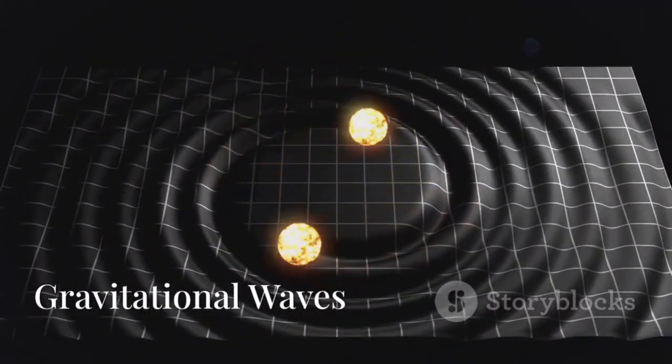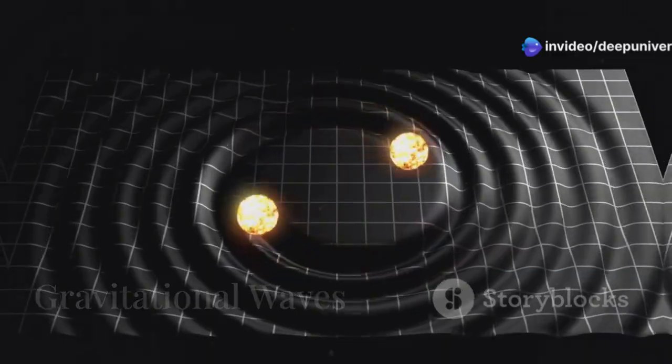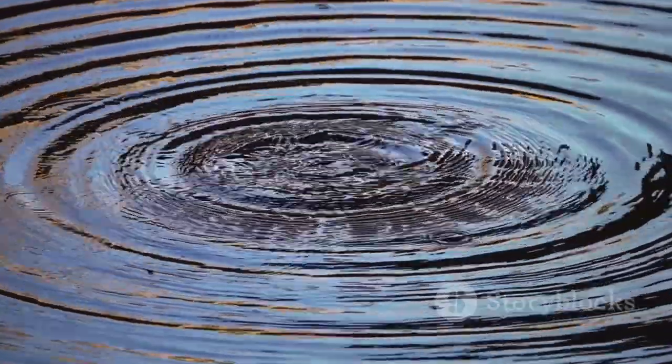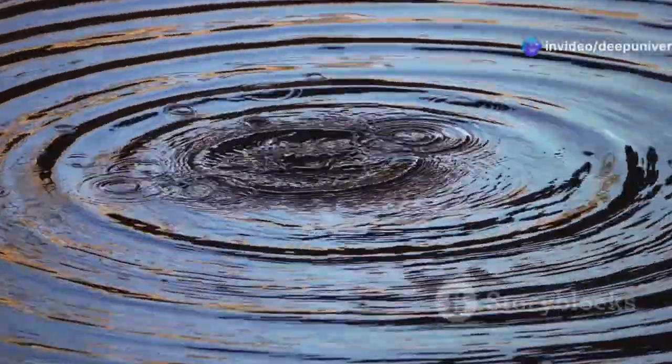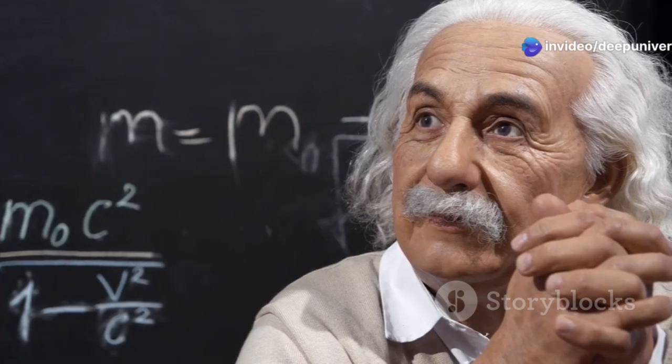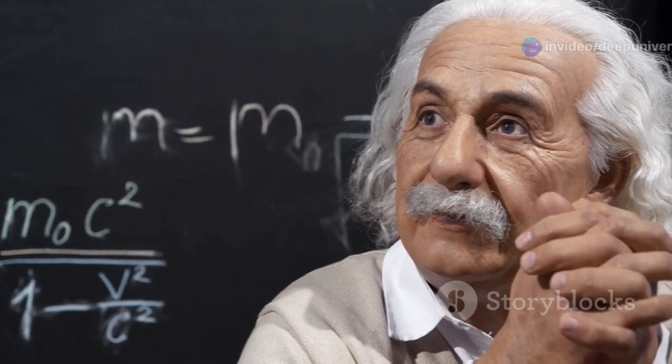Albert Einstein, in his Theory of General Relativity, predicted the existence of gravitational waves. Ripples in the fabric of space-time caused by the acceleration of massive objects. These ripples, like waves spreading across a pond, carry energy away from the source. For decades, gravitational waves remained theoretical, a mathematical whisper in Einstein's equations.